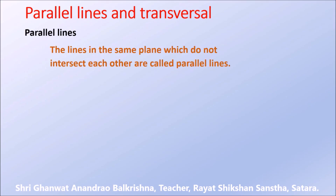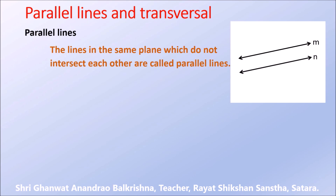Lines in the same plane which do not intersect each other are called parallel lines. See the figure — in this figure line M and line N are both in the same plane and they do not intersect with each other, therefore these two lines are parallel lines.